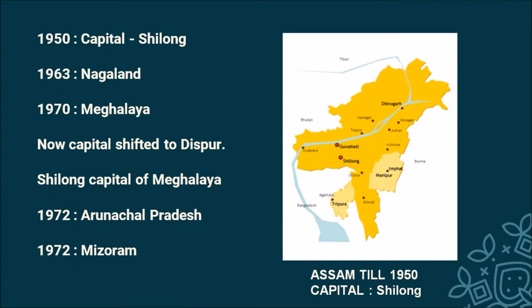Now, have a look at the map of Assam when Nagaland, Meghalaya, Arunachal Pradesh and Mizoram were part of it. At that time, Shillong was its capital. In 1963, Nagaland got separated, and in 1970, Meghalaya got separated. In 1972, Arunachal Pradesh and Mizoram got separated from Assam. After the separation of Meghalaya, the capital of Assam was shifted to Dispur, and Shillong became the capital of Meghalaya.